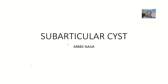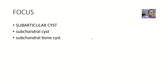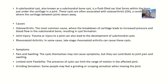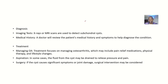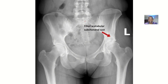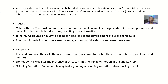For the next condition we'll be looking at, we'll be looking at subarticular cysts, more popularly known as subchondral cysts or subchondral bone cysts — the same thing. We'll get to look at the definition, the causes, the symptoms, the diagnosis, and treatment of these conditions. A subchondral cyst is also known as a subchondral bone cyst.